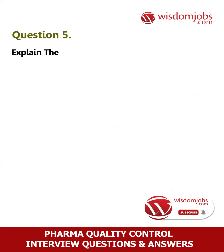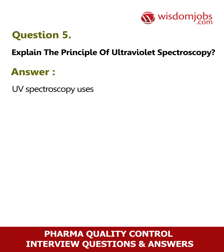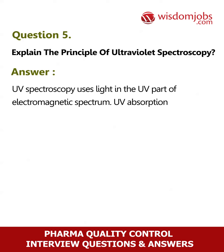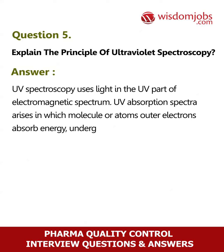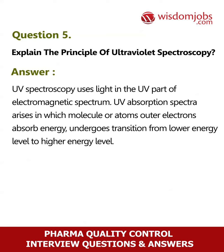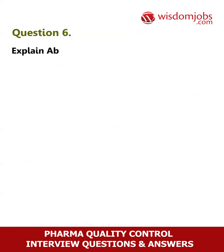Question 5: Explain the principle of ultraviolet spectroscopy. Answer: UV spectroscopy uses light in the UV part of the electromagnetic spectrum. UV absorption spectra arise when a molecule's or atom's outer electrons absorb energy and undergo transition from a lower energy level to a higher energy level. For each molecule, absorbance at a wavelength is specific.